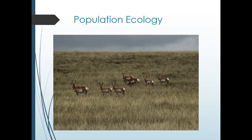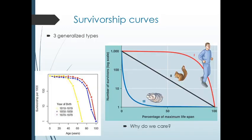Hello everyone. This is the survivorship curves and growth models lecture, and this is going to be the first one where we're going to be talking about population ecology. It's first really important to define what a population is — it's a group of organisms that is one species. So we're not thinking about a community where we have several species. Here we have some pronghorn out in eastern Colorado, and we're talking about the population of pronghorns, not the pronghorns and the coyotes that are eating them, but just one species.